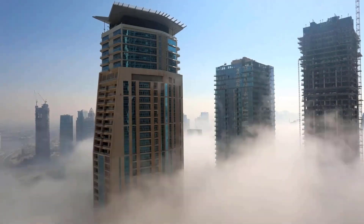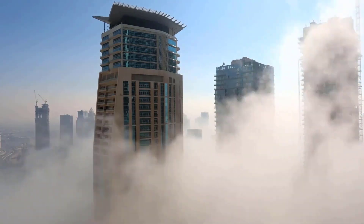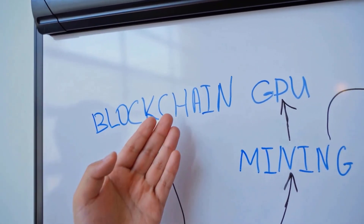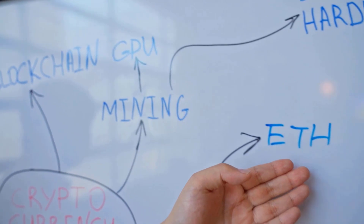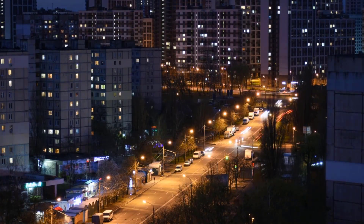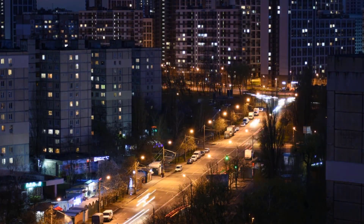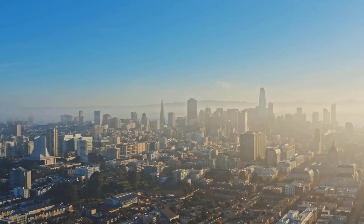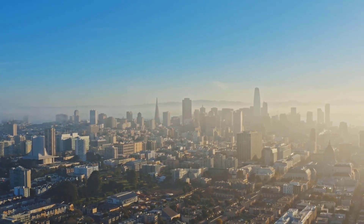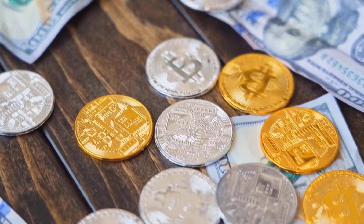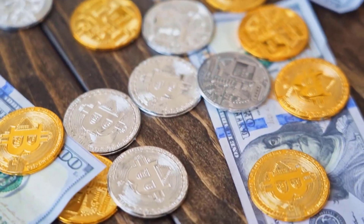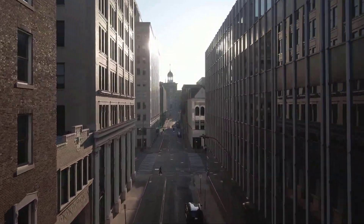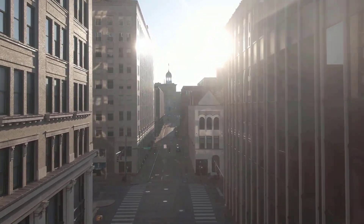Moonriver Crucial Examination: Moonriver is an organization that the local area works itself. Clients can make ideas for working on any region of the organization — pick committee delegates, recommend component or cost changes, and pick how the local area depository ought to be utilized. One of the vital attributes of future DeFi networks is local area administration. Clients cast their votes involving MOVR tokens in the Moonriver Neighborhood Administration Framework. Your vote has more power the more MOVR tokens you stake, and this strategy supports keeping up with the rising worth of MOVR.